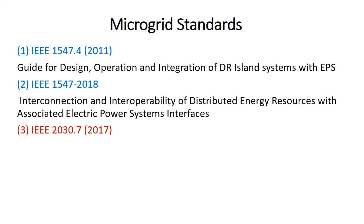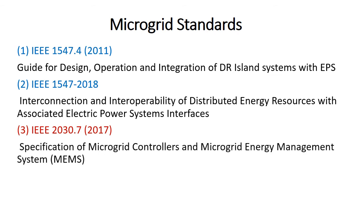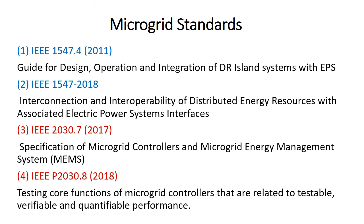The second group of standards is the IEEE 2030 series. IEEE 2030.7 covers the specification of microgrid controllers and microgrid energy management systems. The energy management system checks available stored energy and how much energy is being generated by various distributed energy resources, and controls them accordingly. IEEE 2030.8 addresses testing core functions for microgrid controllers related to testable, verifiable, and quantifiable performance.